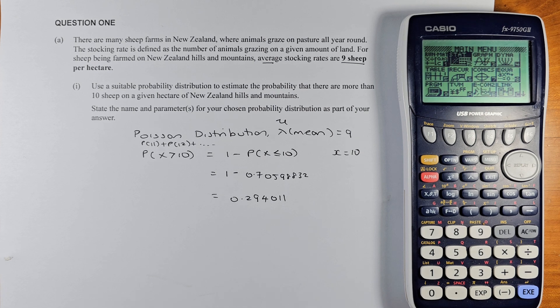The question is: There are many sheep farms in New Zealand where animals graze on pasture all year round. The stocking rate is defined as the number of animals grazing on a given amount of land. For sheep being farmed in New Zealand hills and mountains, average stocking rates are 9 sheep per hectare. Use a suitable probability distribution to estimate the probability that there are more than 10 sheep on a given hectare of New Zealand hills and mountains. State the name and parameters for your chosen probability distribution as part of your answer.